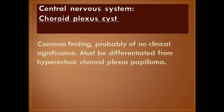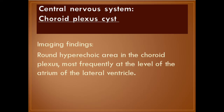Choroid plexus cyst — common findings, probably of no clinical significance. Imaging findings: round hyperechoic area in the choroid plexus, most frequently at the level of the atrium of the lateral ventricle.